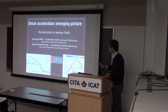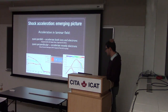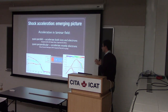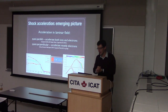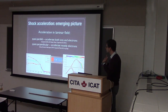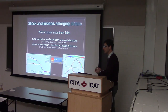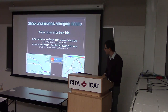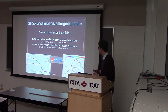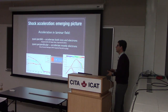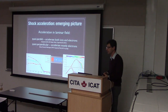Preliminary conclusions: quasi-parallel shocks should accelerate both ions and electrons — ions go first, then drive waves that create electron scattering. Quasi-perpendicular shocks, from what we can see now, if they accelerate, they accelerate electrons, probably less efficiently than quasi-parallel shocks accelerate ions.